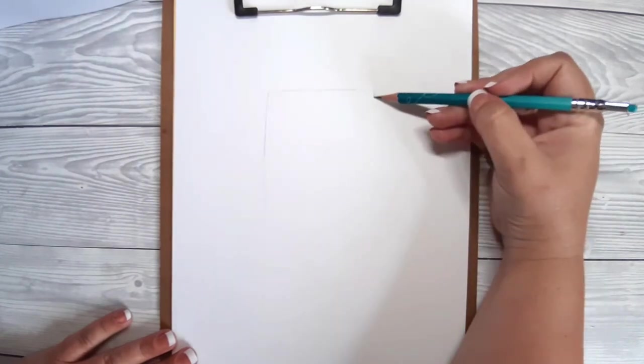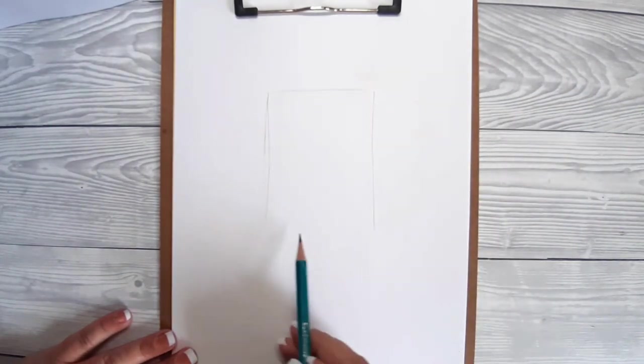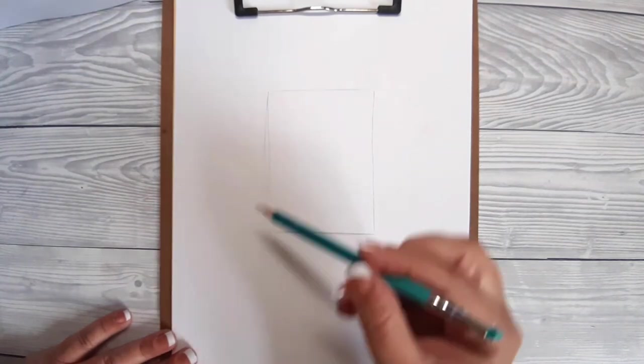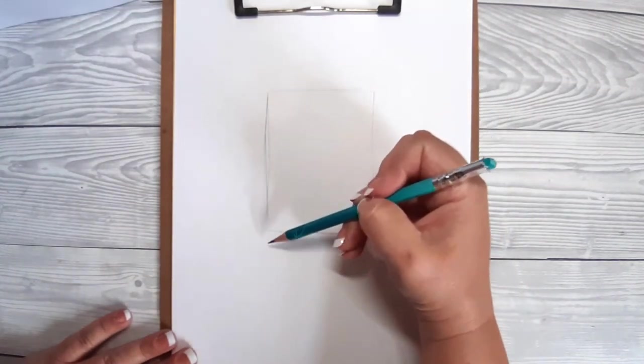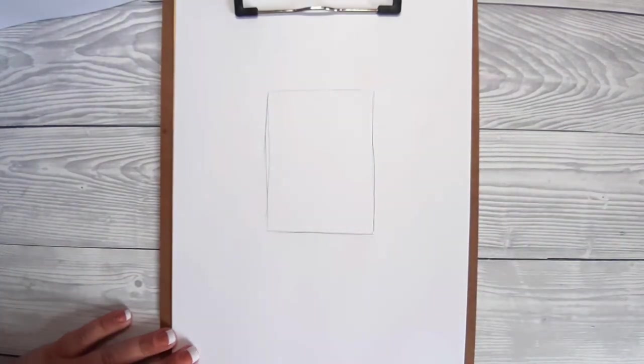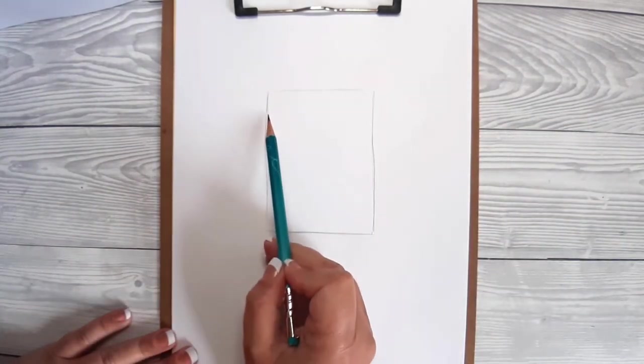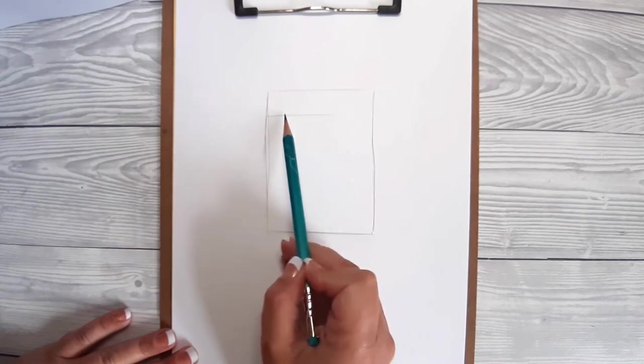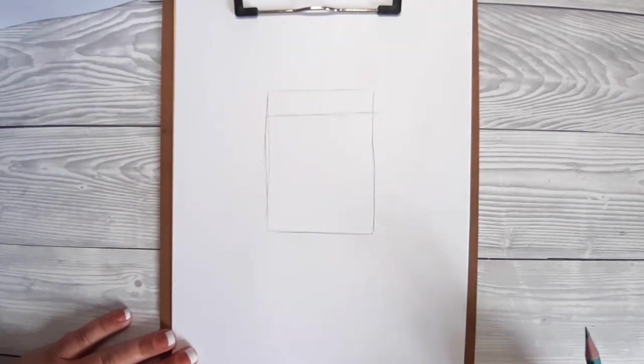So to start off let's draw a rectangle. We're going to draw this image nice and big in the center of our page, but just remember that you can draw it any size, just size it up or size it down. We're going to section off a small bit at the top so we've got a large rectangle and a small rectangle.